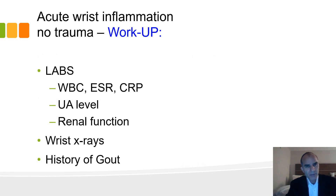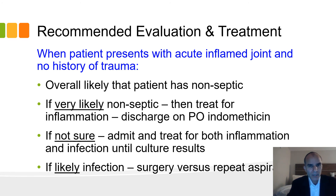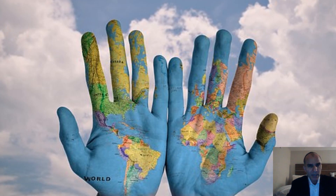Here's the workup: labs — white count, sed rate, CRP, uric acid level, renal function — wrist x-rays, and history of previous gout. For evaluation and treatment — this is my algorithm: if it's likely not septic, I don't treat for both inflammation and infection simultaneously. I decide ahead of time what's most likely, and if I think it's non-septic, I treat for inflammation only and discharge on oral indomethacin with follow-up in two days. If I'm not sure, it's reasonable to admit the patient and treat for both while waiting for culture results. If infection is likely, you can operate, or if unsure, do repeated aspiration while monitoring response to antibiotics or waiting for culture results. Thank you very much — I hope this was educational.